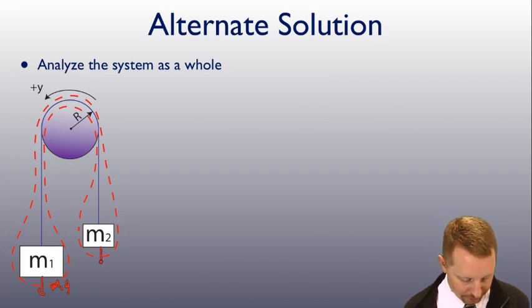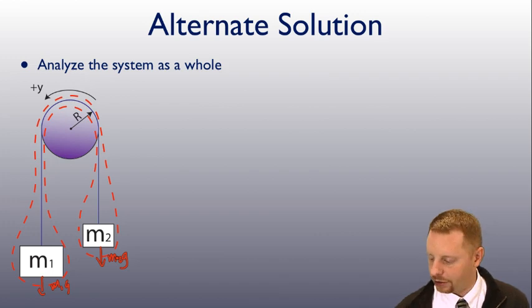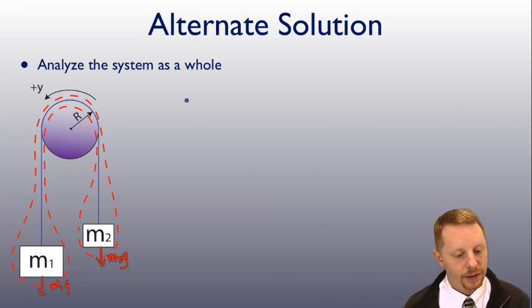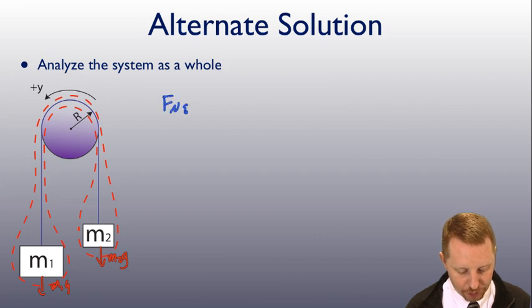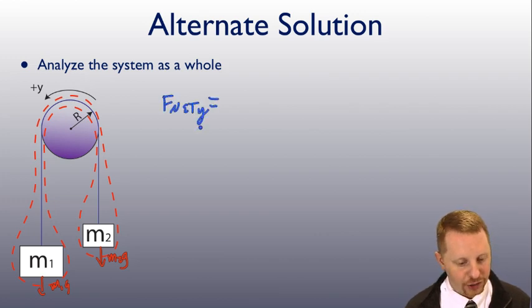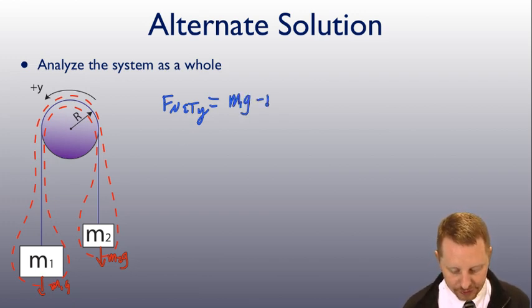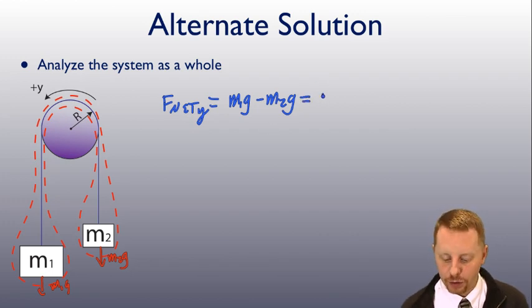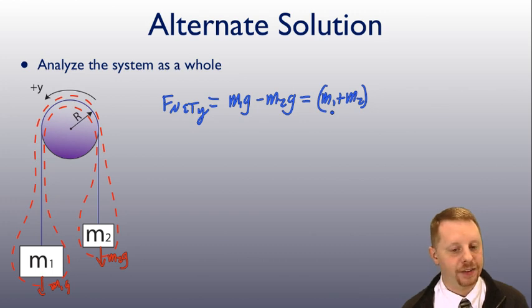M1 is going to have M1G pulling this way in the positive Y direction. M2 is going to have M2G pulling this way in the negative Y direction. So if I go to write my Newton's second law equation right away, net force in the Y direction is going to be M1G over here minus M2G. And that has to equal the total mass of my system, M1 plus M2, because I'm looking at the system as a whole, times the acceleration of the system.